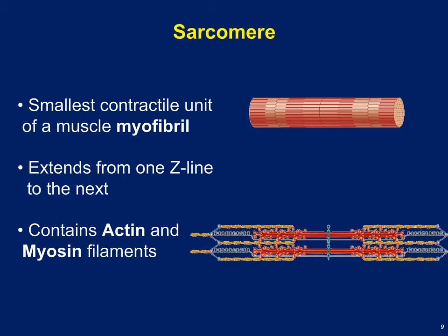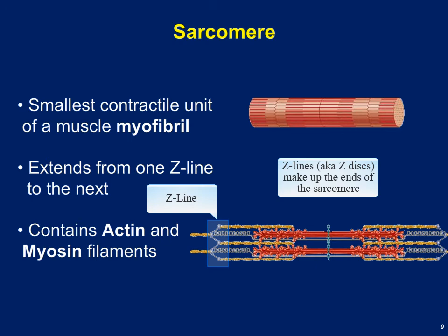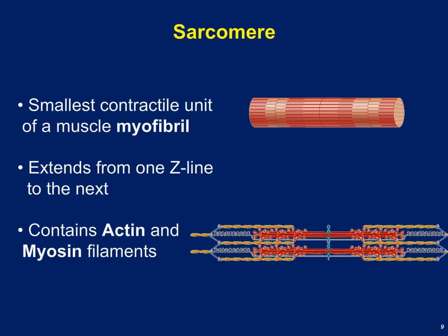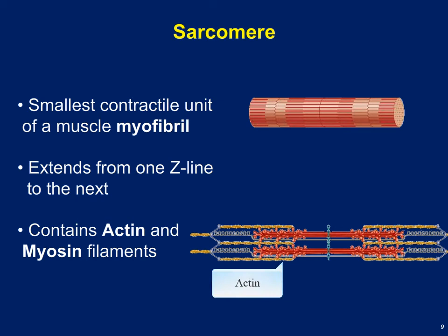Looking at a closer picture of the sarcomere: sarcomeres are the repeating units of the myofibrils and the smallest contractile unit of a muscle. Each sarcomere extends from one Z-line to the next Z-line. Within the sarcomere we find two main types of protein — actin and myosin. Myosin is the thick red protein with little golf club-like heads on it. Actin is the thin orange protein attached to the sides of the Z-lines.